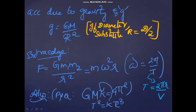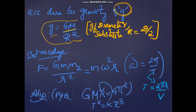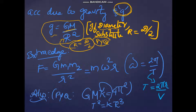Acceleration due to gravity is indicated by the letter g, and g = GM/r². This is a common formula learned from 10th standard. If a question gives diameter instead of radius, you must substitute r = d/2. This is a previous year question application.